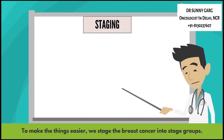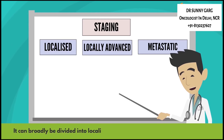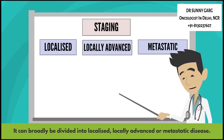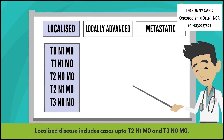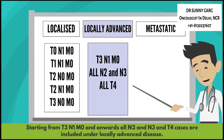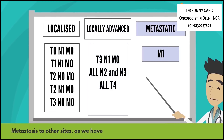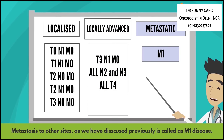To make things easier, we stage breast cancer into stage groups, which can broadly be divided into localized, locally advanced, or metastatic disease. Localized disease includes cases up to T2N1M0 and T3N0M0. Starting from T3N1 onwards, all N2, N3, and T4 cases are included under locally advanced disease. Metastasis to other sites is called M1 disease.